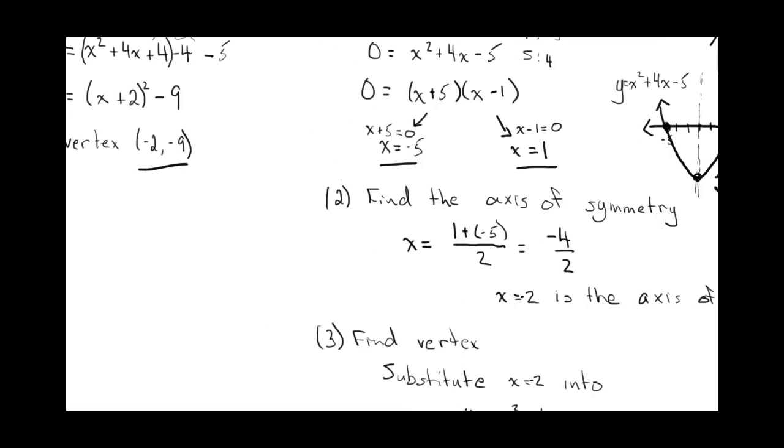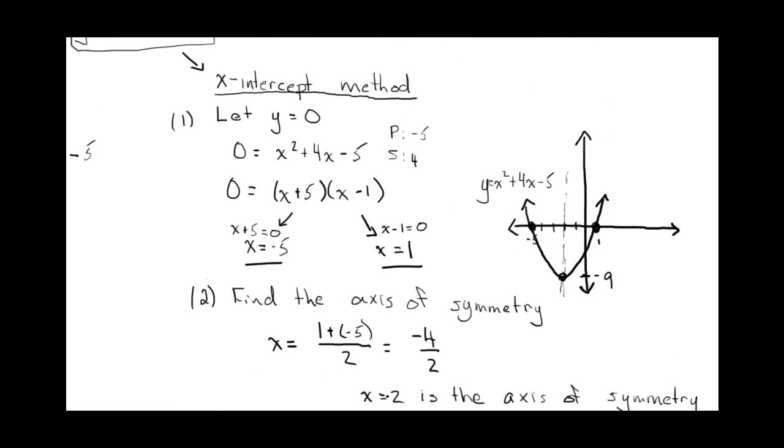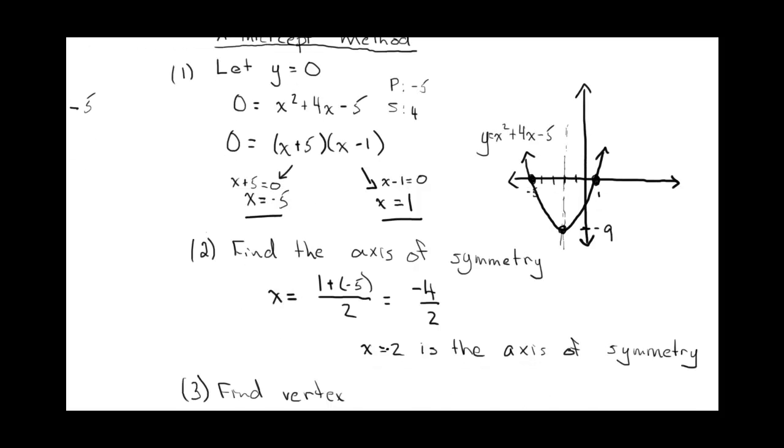Notice it's the same vertex that we got when we completed the square. So you're going to get the same parabola. It's just a different method of doing it. So the first thing you do is you find the x-intercepts. Then you find the axis of symmetry. And then you can find the vertex.